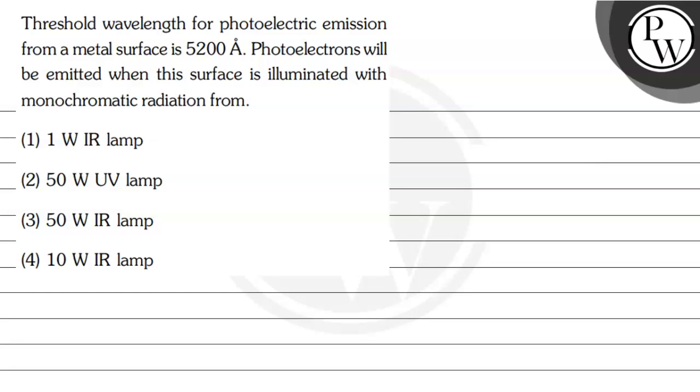Let's read this question. The question says that threshold wavelength for photoelectric emission from a metal surface is 5200 angstrom. Photoelectrons will be emitted when this surface is illuminated with monochromatic radiation from options are 1 watt IR lamp.